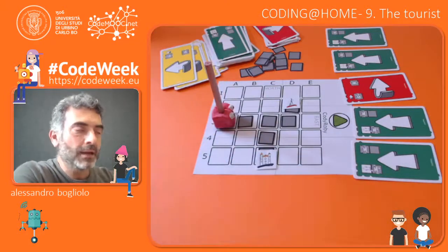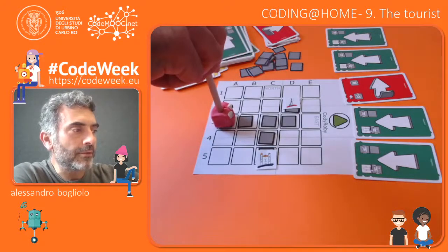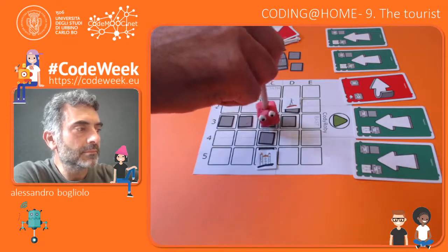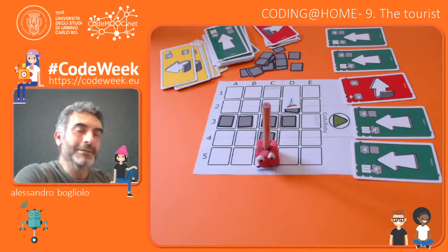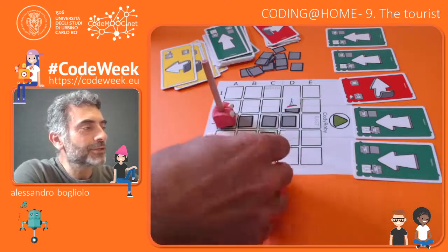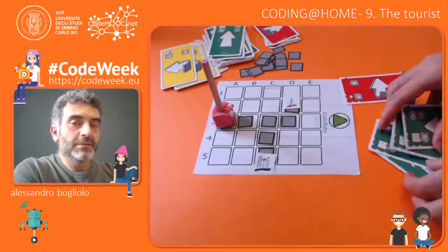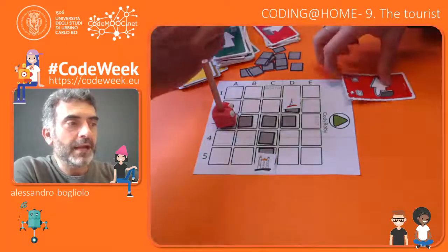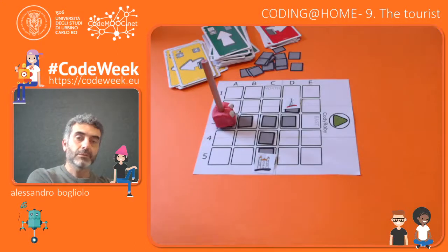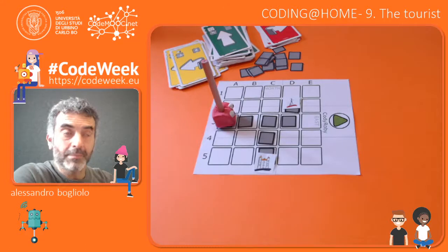Let's check. This time I'm going to play the role of Robbie and execute her program. Forward, forward, right, forward, forward. Anna is the winner! Now let's try to reach another monument. It is very important to place the cards back into the deck — and possibly into three different decks based on the types of cards — in order to make it easier to pick them from the decks.